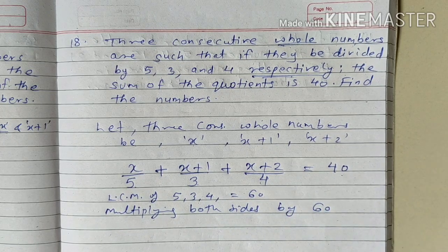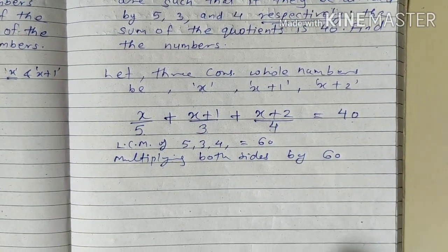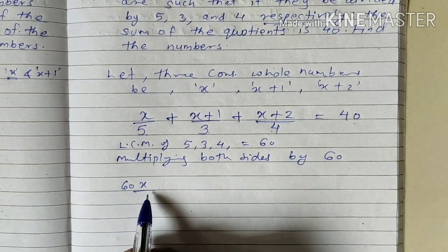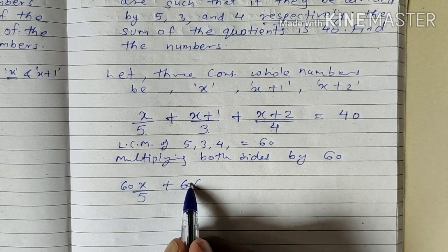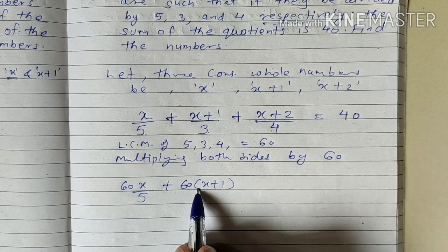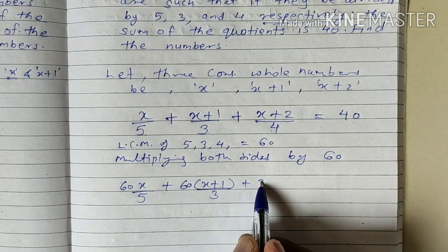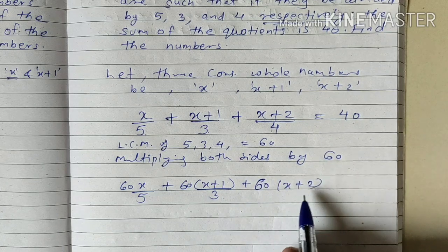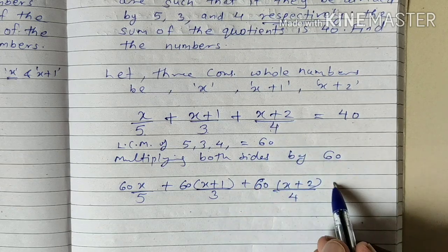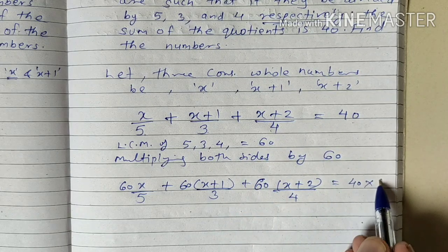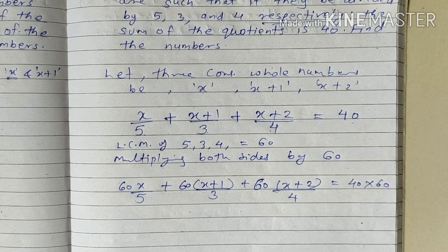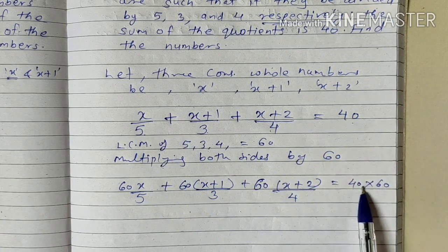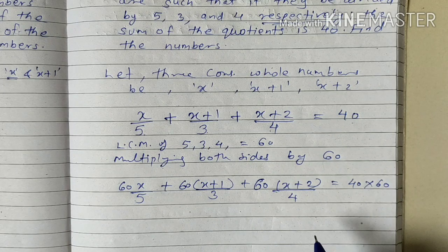Multiplying both sides by 60: it gives us 60x upon 5, plus 60 times (x plus 1) upon 3, plus 60 times (x plus 2) upon 4, equals 40 multiplied by 60. We multiplied the whole equation by 60 to cancel the denominators.